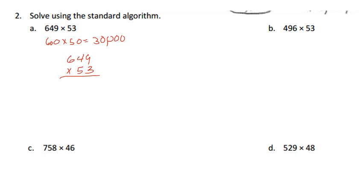Starting with our ones: 3 times 9 is 27, carry the 2. 3 times 4 is 12 and 2 is 14, carry the 1. 6 times 3 is 18 and 1 is 19. Now we're going to 50s but instead of 50, I'm going to put the zero there and go 5. 5 times 9 is 45, carry the 4.